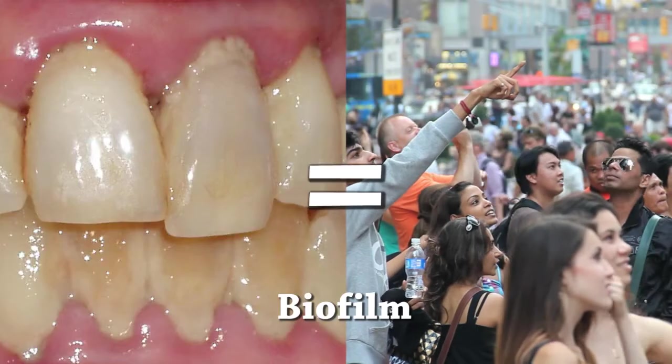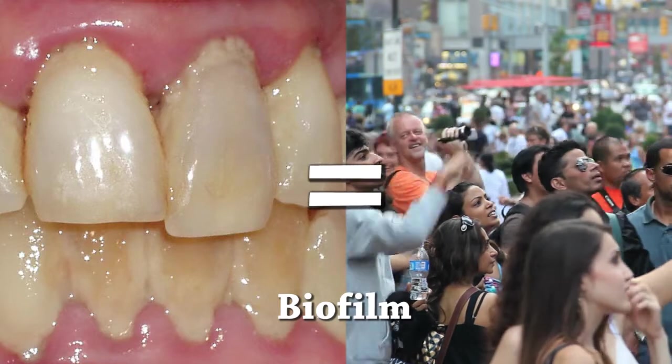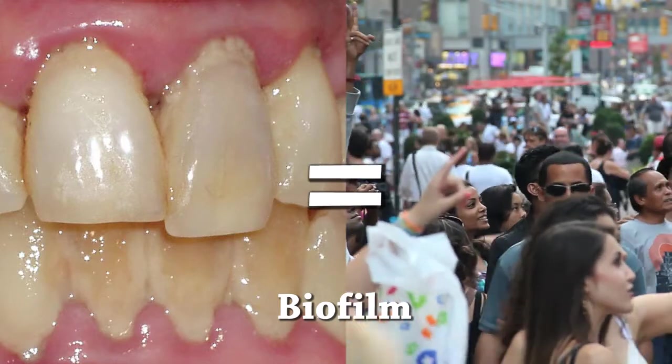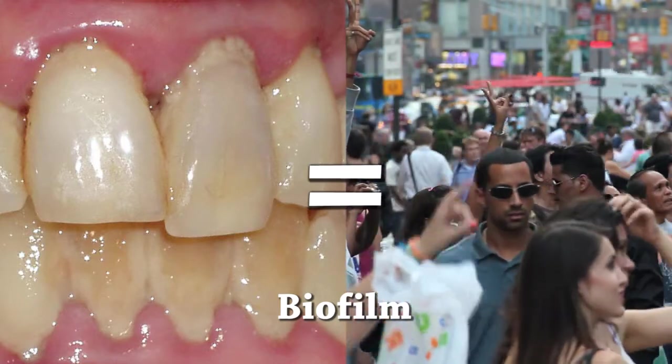Bacteria live in organized layers called biofilm. Biofilm is like a bacterial city where various bacterial types live in specific niches. Different species thrive in different layers of the biofilm since there are different gradients of oxygen and metabolites. In general, the deeper under the gum the more sinister the bacteria become as they trend towards gram-negative anaerobic species.